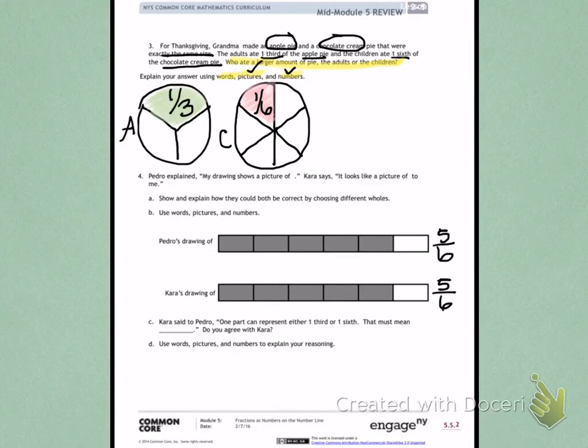So this number four, unfortunately, I'm not really going to be able to be much help with since I don't have those fractions on my paper. When you look at it though, think about how both people could be correct with what they have to say. Explain that using words, pictures, and numbers. You can use the pictures down here to help you explain how both people can be correct.